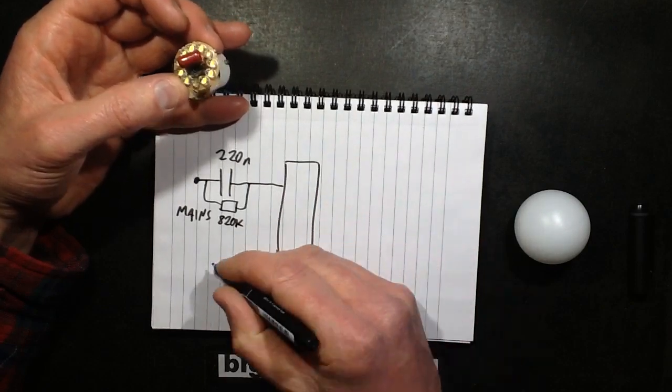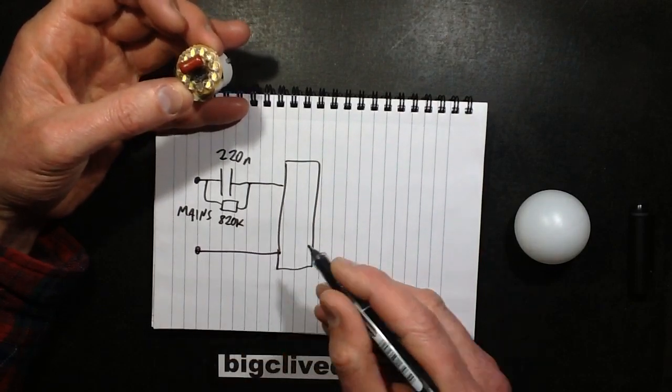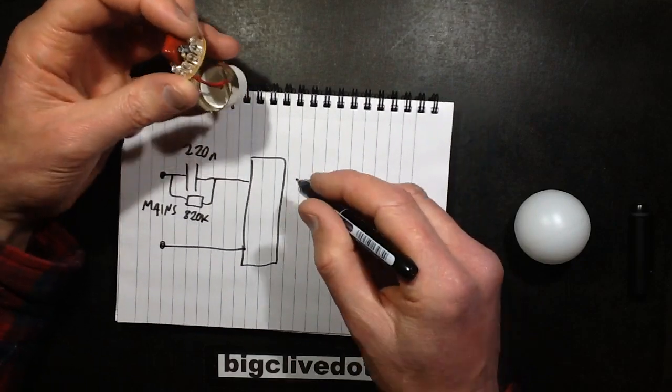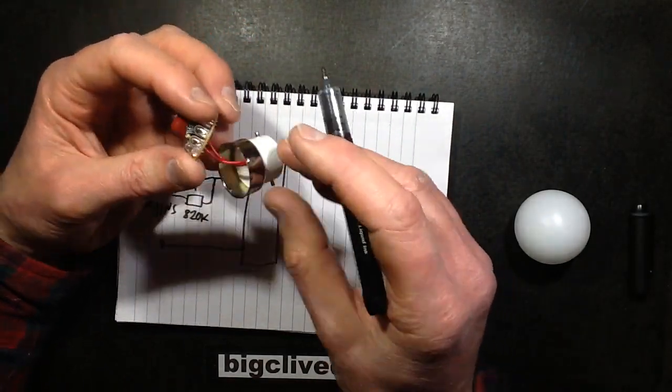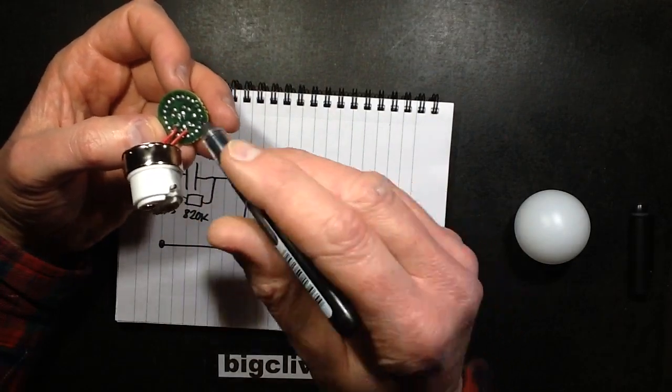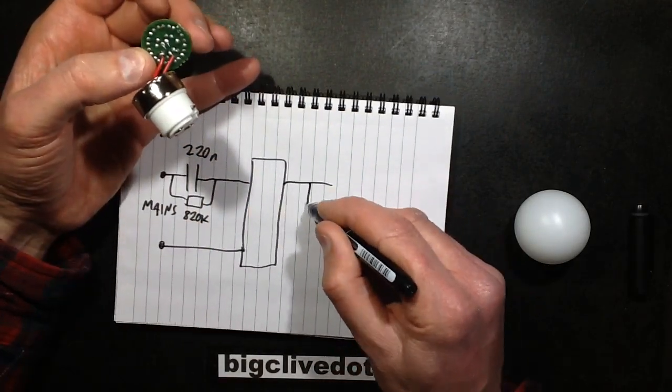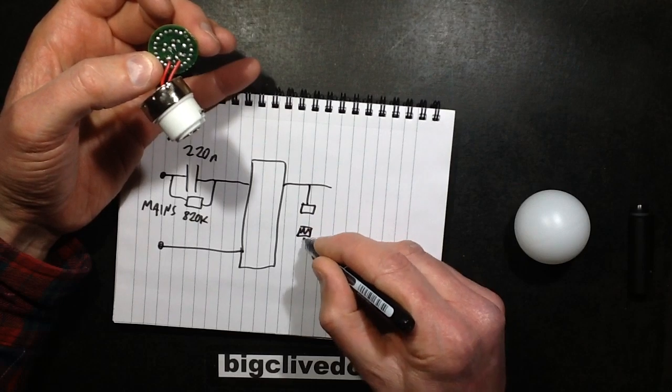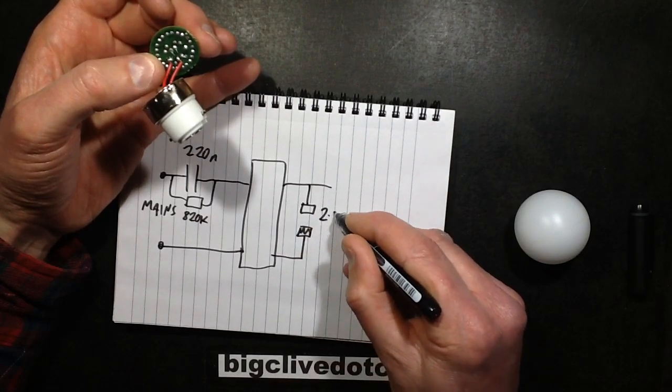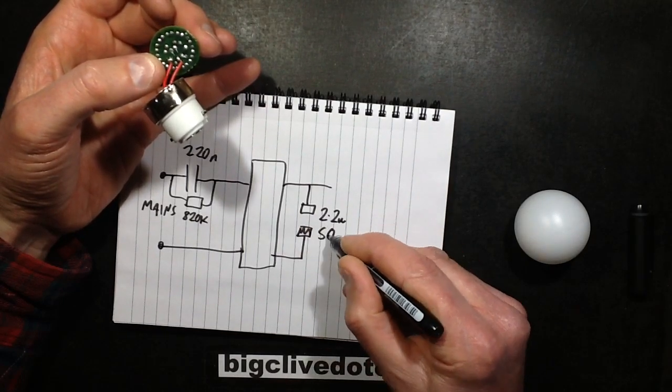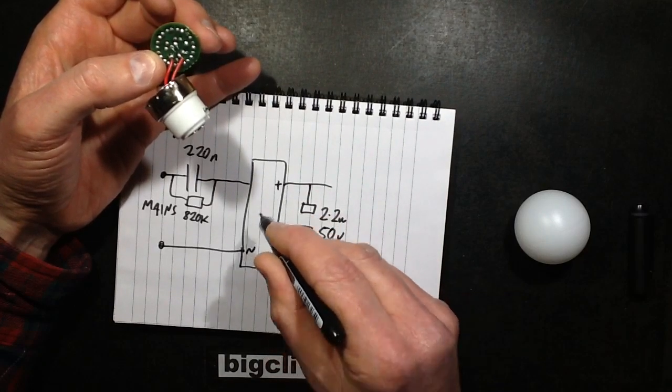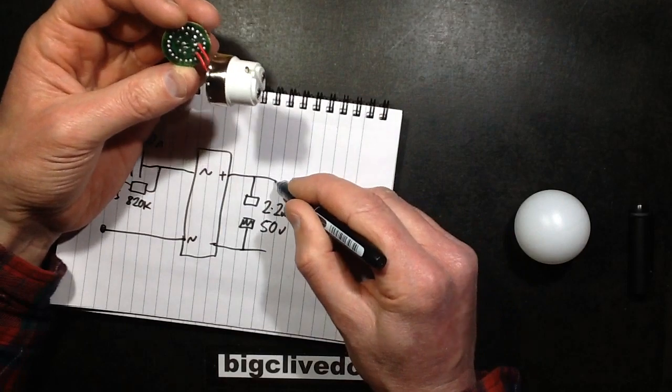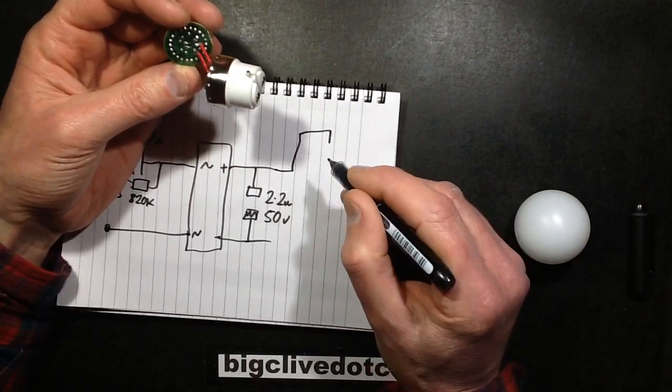Then it's going to the bridge rectifier and the main terminals go into the bridge rectifier. The output is actually smoothed. They've got a little capacitor just tacked across the output which is rated 2.2 microfarad at 50 volt. So that's plus, that's minus, that's AC, AC.